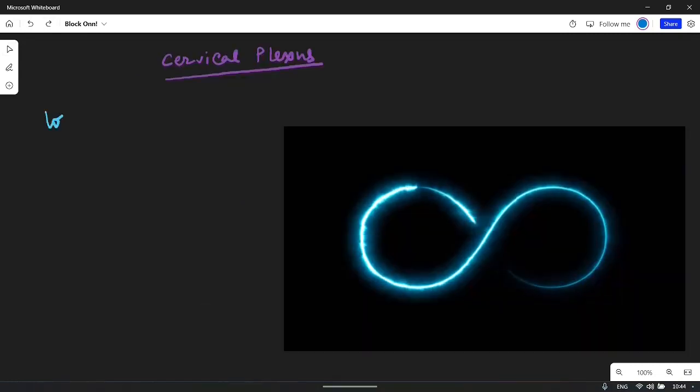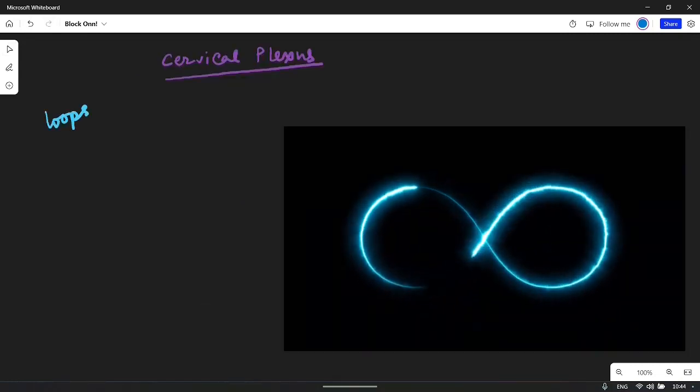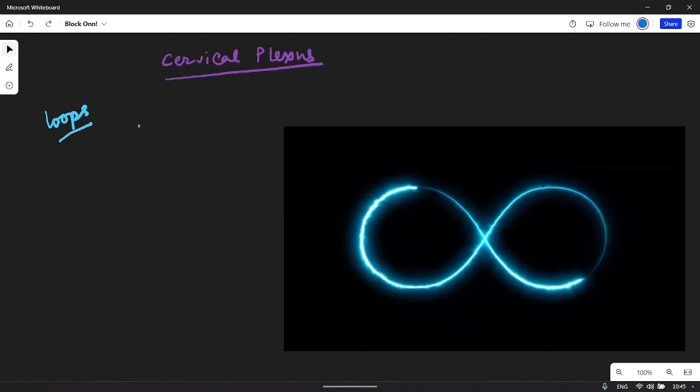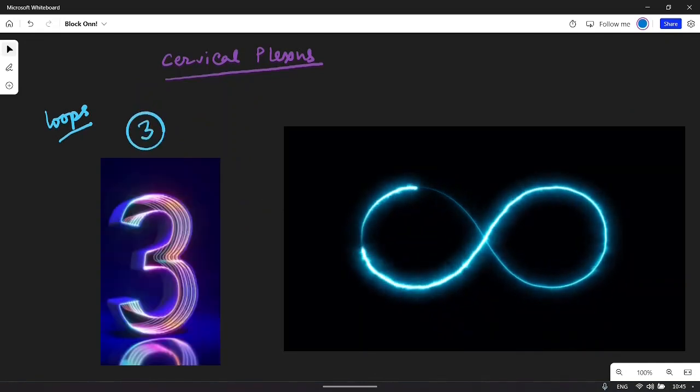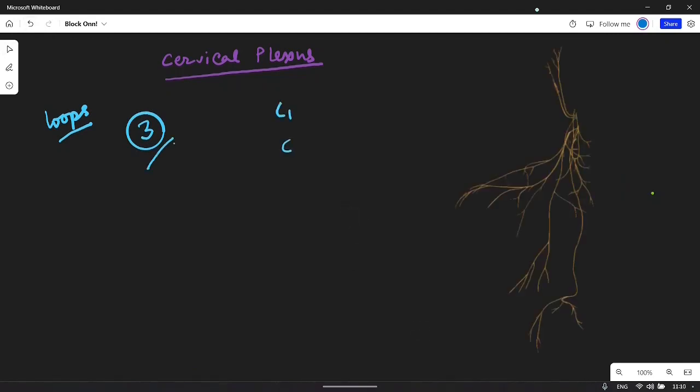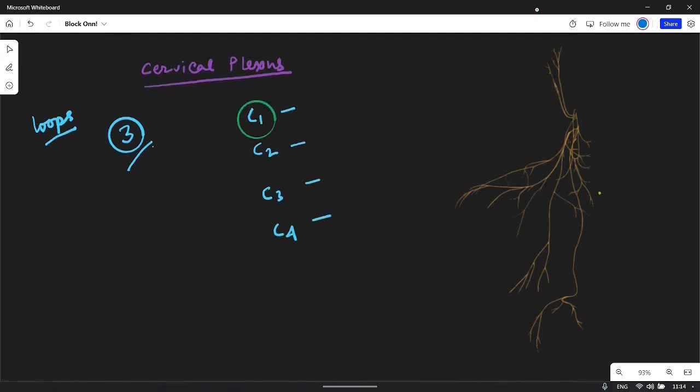The cervical plexus is considered as the plexus of loops. I remember this as a plexus of three. Please watch the full video, you will gradually understand this. The cervical plexus is formed by the ventral primary rami of the first to fourth cervical nerves. Each ramus except the first one divides into ascending and descending parts which unite in communicating loops.